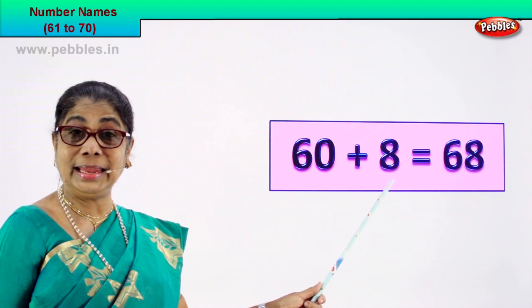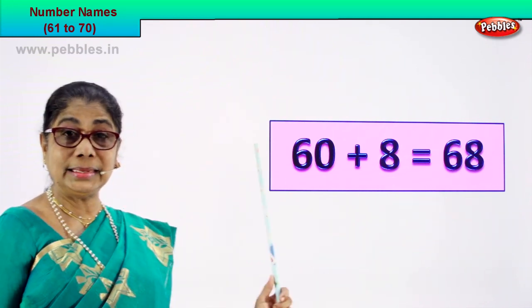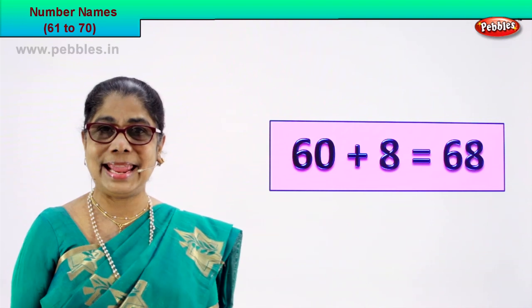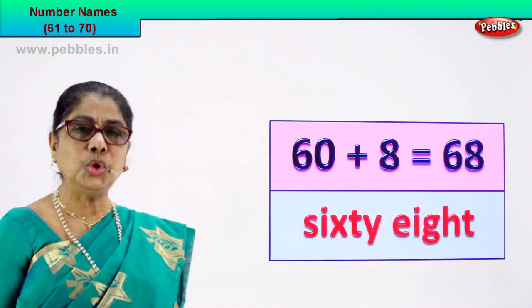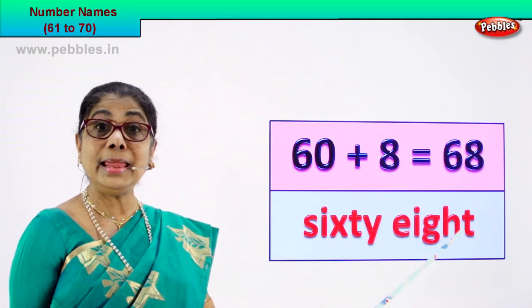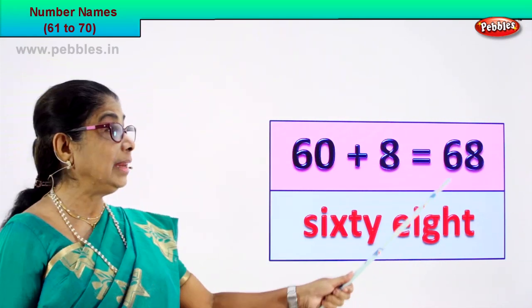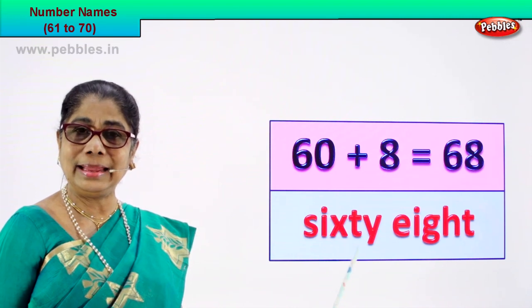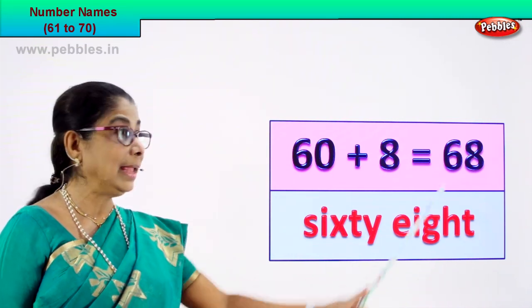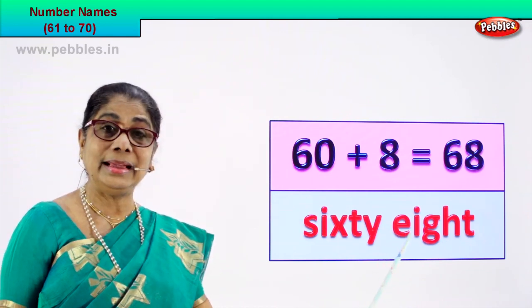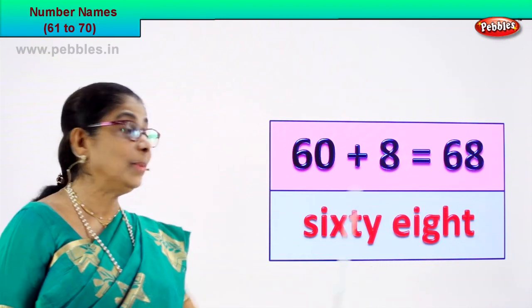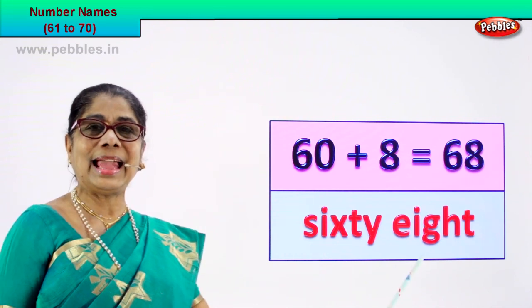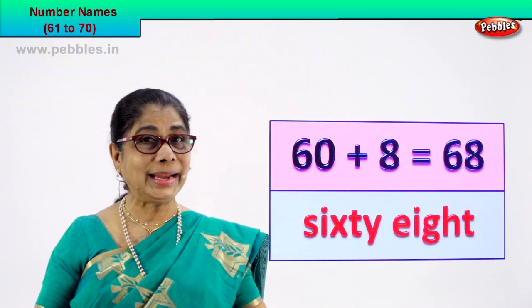60 plus 8 is equal to 68. 6 and 8, 68. Now 68 is the numeral. We must write the name — how do we write it? Spell and write the name of this numeral. 60 you know and 8 you know. S-I-X-T-Y, 60. E-I-G-H-T, 8. 68 — numeral and its name is sixty-eight. Good!